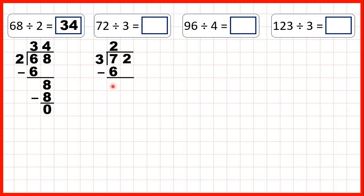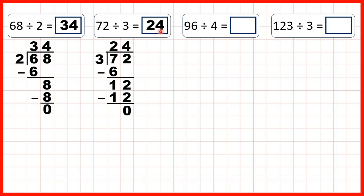Now we subtract and bring down. 7 minus 6 is 1, and we can bring down the 2, so now we have 12 divided by 3. Well 12 is in the 3 times table, and because that's 4 times 3, we can write 4 in our answer line, so our answer is 24.